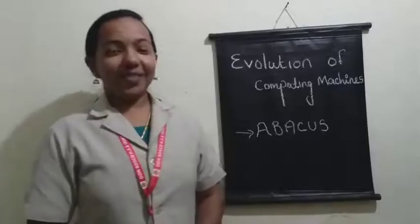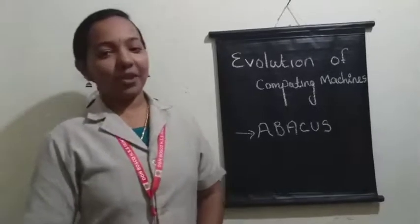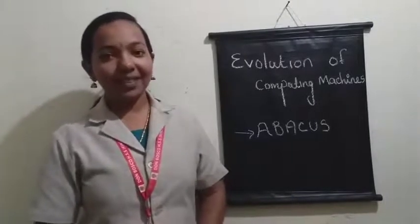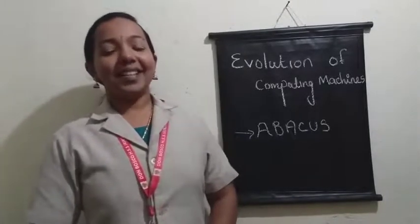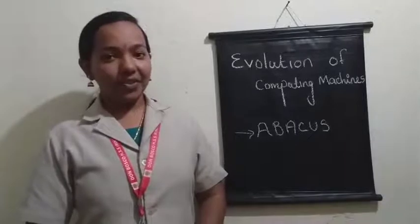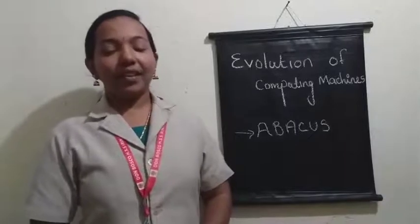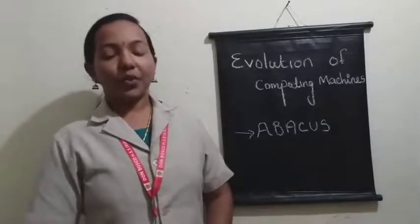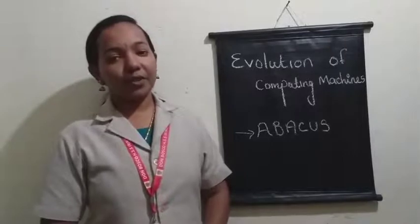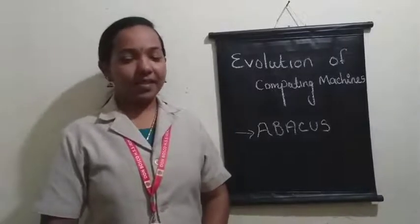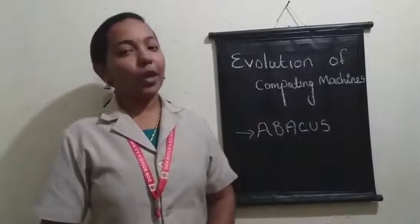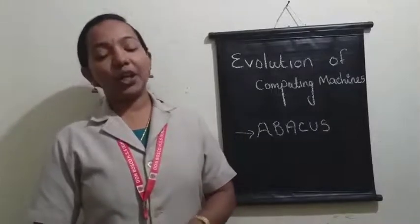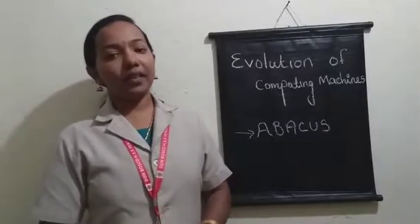Hi students, welcome to the computer class. Hope you all are fine and safe at home. This is our video number 2nd, chapter 9th, Discipline of Computing. We already discussed the evolution of positional number system in the previous video. Hope you completed your notes. In this section, we are continuing the topic: evolution.